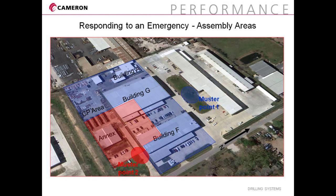The north assembly area muster point 1 is located at the north part of the property in the grass area. Employees in the proximity of this area should proceed via the designated evacuation route and emergency exit to muster point 2. Personnel shall remain at this location until further actions are determined by plant management.